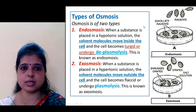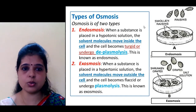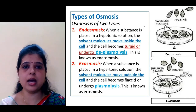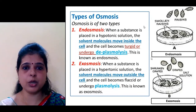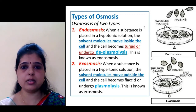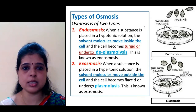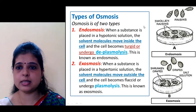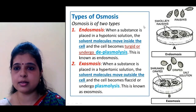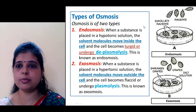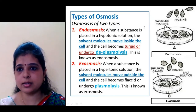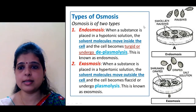Now, the types of osmosis. There are two types of osmosis: first is endoosmosis and second is exoosmosis. In endoosmosis, when a substance is placed in a hypotonic solution, the solvent molecules move inside the cell, and the cell becomes turgid and undergoes plasmolysis. For example, if you place raisins in a hypotonic solution containing a lower concentration of solute, water molecules will move inside the raisins by endoosmosis and result in swollen raisins.